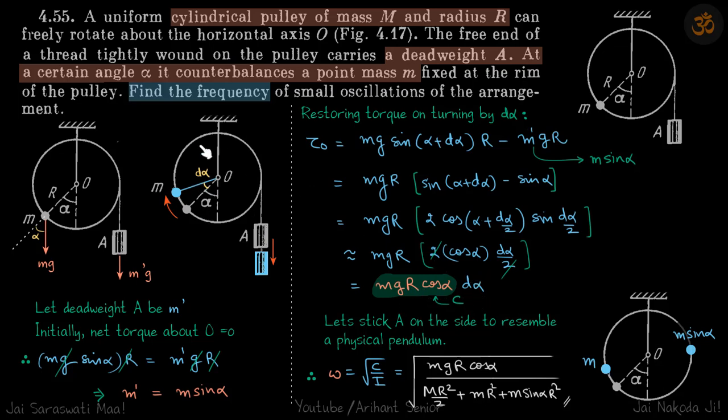Now this is a physical pendulum. If we turn it by a small angle d alpha, we get the restoring torque as c times d alpha, where c is a proportionality constant. So this is simple harmonic motion, and omega will be square root of c by i.